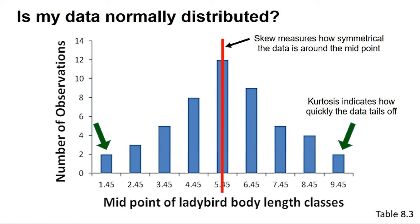We can also calculate a kurtosis value. In a normally distributed data set, the data tails off from the central position in a defined way. The kurtosis value can indicate if your data tails off too quickly or slowly. A kurtosis value between minus 2 and 2 can be consistent with a normally distributed data set.